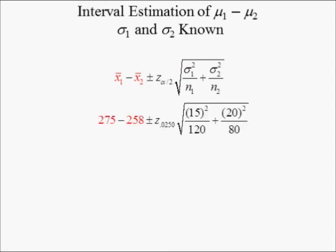The values in red font are the sample means: x-bar 1 equals 275 yards and x-bar 2 equals 258 yards. Since the confidence level is 0.95, the significance level is 0.05. Thus, the subscript of the z-value is 0.0250 because there are two tails in confidence intervals. The population standard deviations were 15 and 20 yards, while the corresponding sample sizes were 120 and 80. The z-value equals 1.96 because 0.0250 is in row negative 1.9 and column 0.06 of the standard normal table.